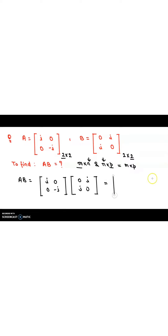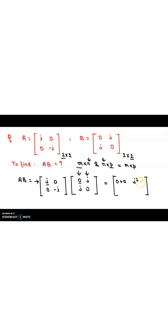There is one way to do the product of matrices. We take the first row of the first matrix and multiply it by the first column of the second matrix. So: I×0 = 0, and 0×I = 0, giving us zero plus zero for the first entry. For the second entry, we take the first row of the first matrix and the second column of the second matrix: I×I = I² and 0×0 = 0, so the result is I².